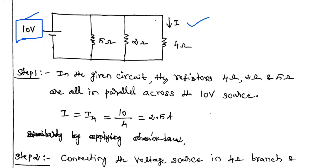So in the first step, in the given circuit, the resistors 4 ohm, 2 ohm, and 5 ohm are connected in parallel. Our aim is to find out the current flowing through the 4 ohm resistor. In a parallel connection, the voltage across each resistor remains the same. Parallel to the 5 ohm, 2 ohm, and 4 ohm, the 10 volt battery is there. So the voltage across the 5 ohm is also 10 volt, the voltage across the 2 ohm is also 10 volt, and the voltage across the 4 ohm resistor is also 10 volt.